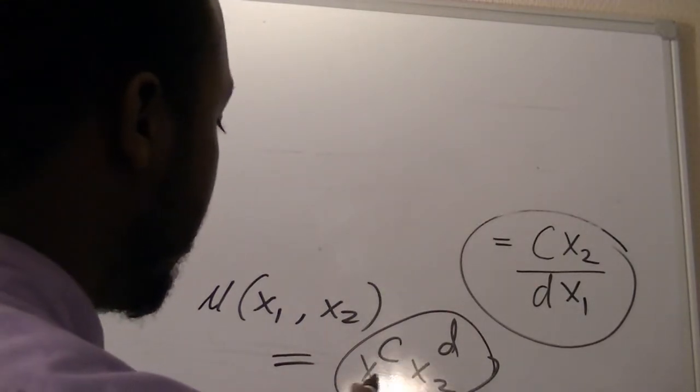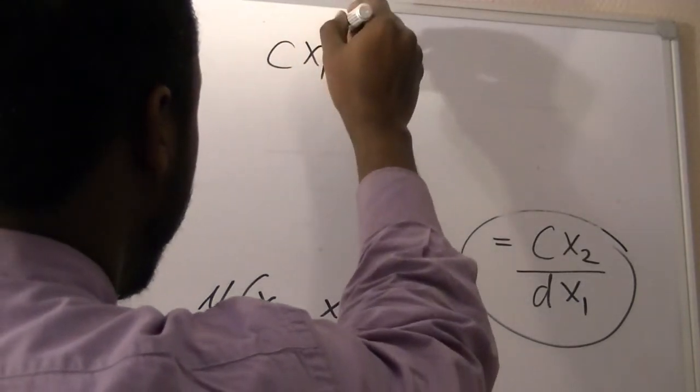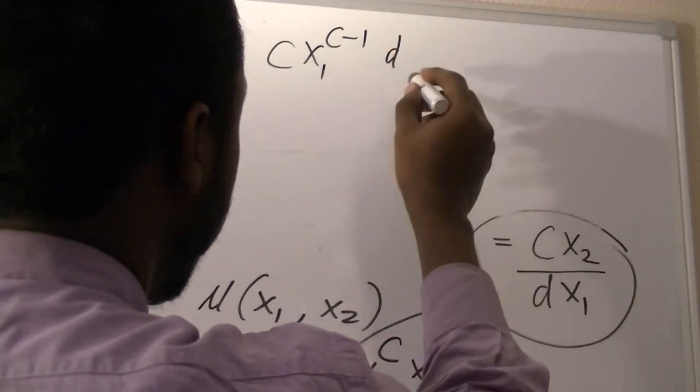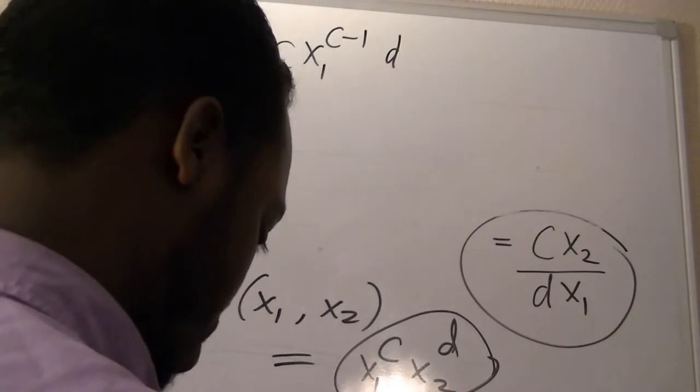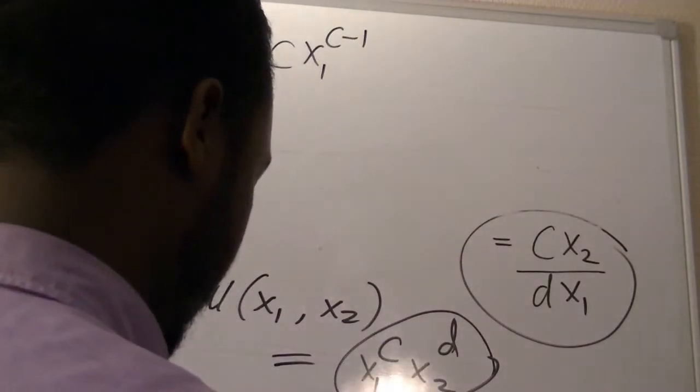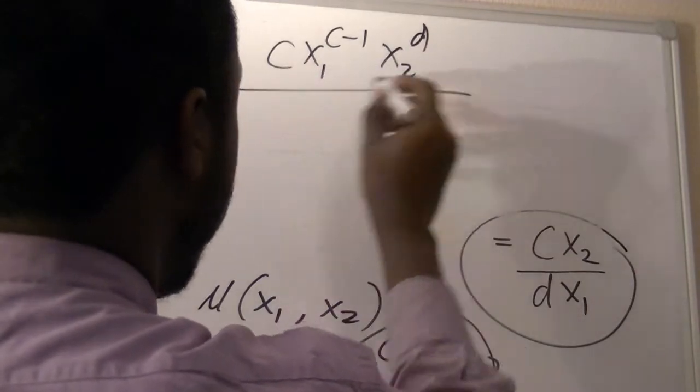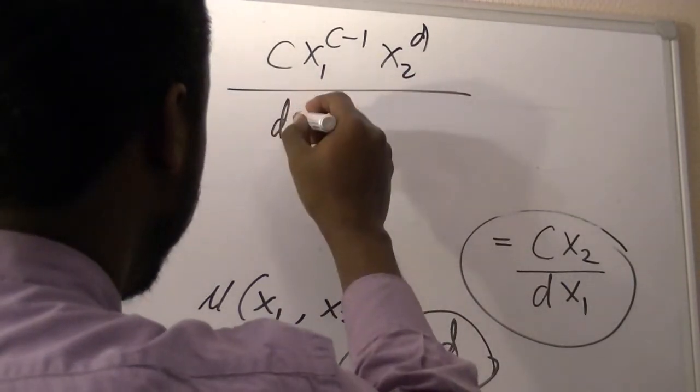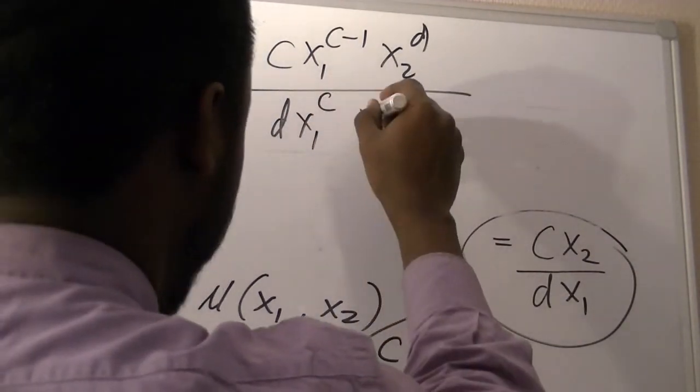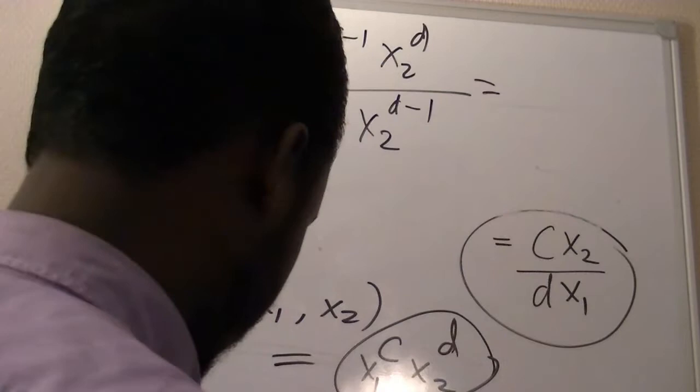If we take the partial derivative of this function with respect to x1, then we have c times x1 to the power of c minus 1, times x2 to the power of d, divided by d times x1 to the power of c, times x2 to the power of d minus 1.